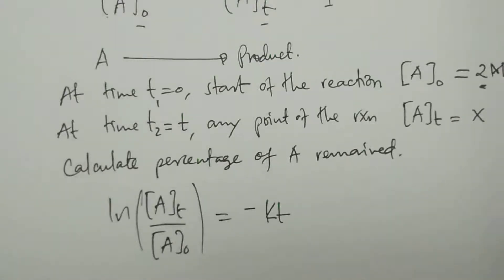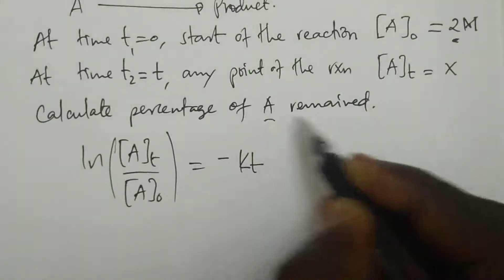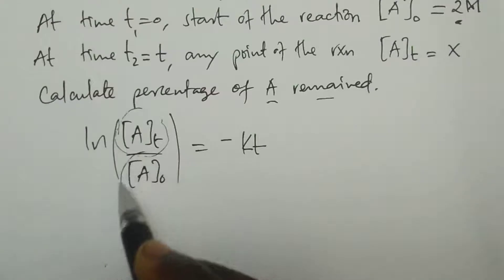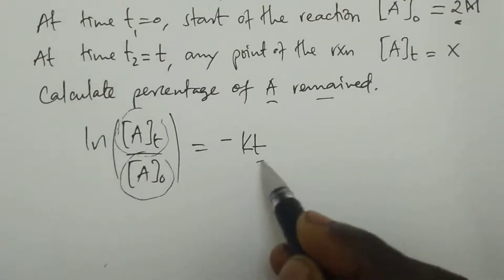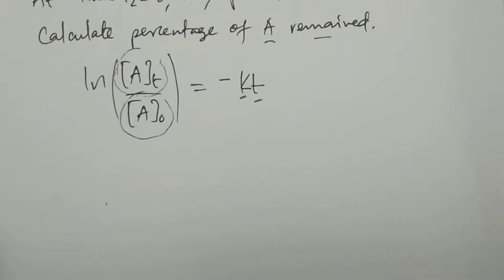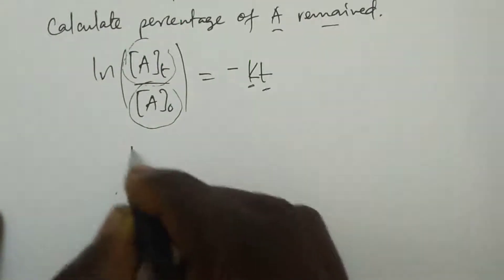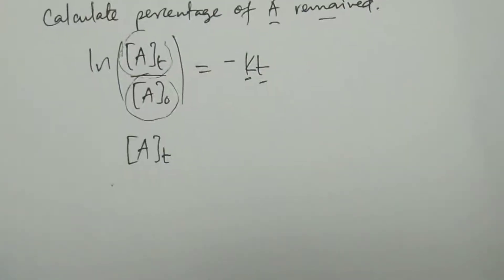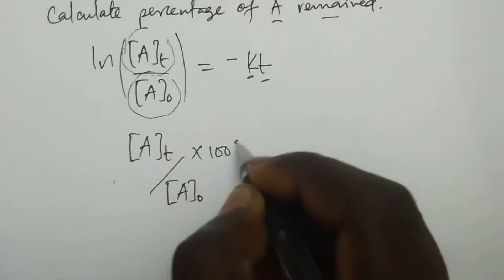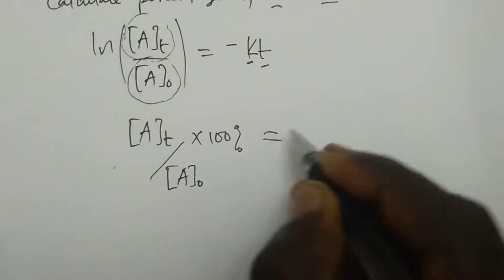Now, what we say, for example, if you want the percentage of A remained, the percentage of A remained, look, concentration Aₜ is what remained after some time. Then, concentration A₀ is the starting A concentration. While T is time, the rate constant, that you're given. So, finally what we have is, finally what we have is, percentage of A remained is the same as saying concentration Aₜ, which is what remained at time T, we call it Aₜ. Then, we divide by the total concentration A₀. Then, we multiply by 100 to get the percentage. This is the percentage of A remained. But, if it says percentage reacted.